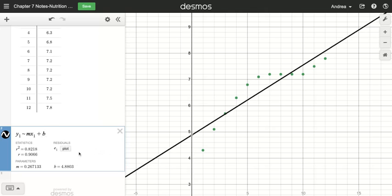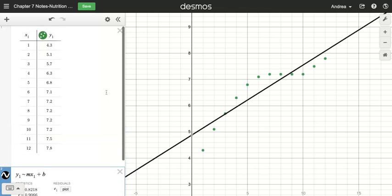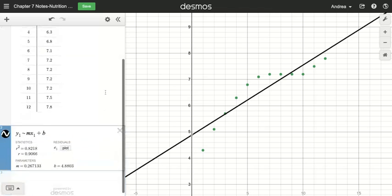Now when I'm looking at this line, I can see down here, it's given me some numbers. I have my slope. I have my y-intercept. So I can fill those in and I can have a line of best fit. It would be y equals 0.267133x plus 4.8803. So that's how you're going to go ahead and create your scatter plot, create your line of best fit.